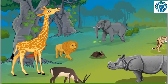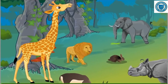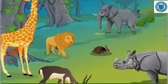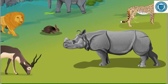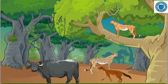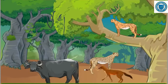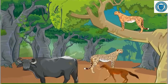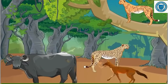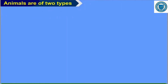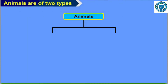Animals can be seen all around us. Some animals can be seen inside our houses, some can be seen only on farms or grounds near our houses, and some can be seen only in the forest. Animals are of two types: wild animals and domestic animals.